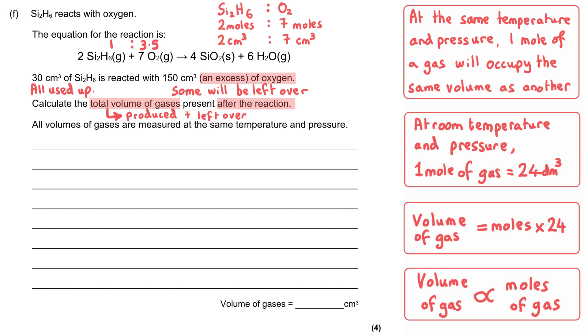To put this another way, whatever the moles or volume we have of Si2H6, it will require three and a half times the number of moles or cm³ to react with it. We've been told we've got 30 cm³ of Si2H6, and so it will react with some of the oxygen. We can work out how much by multiplying the volume of Si2H6 by 3.5, and this gets us 105 cm³ of oxygen used. The ratio of volumes 30 to 105 is the same as the ratio from the equation 2 to 7, just scaled up 15 times.